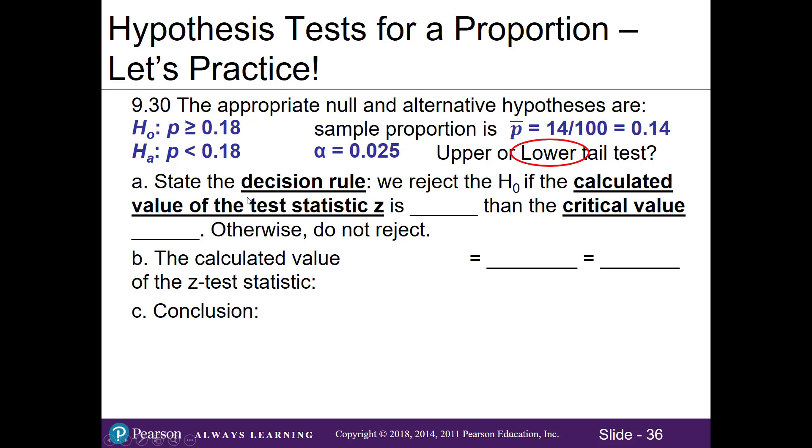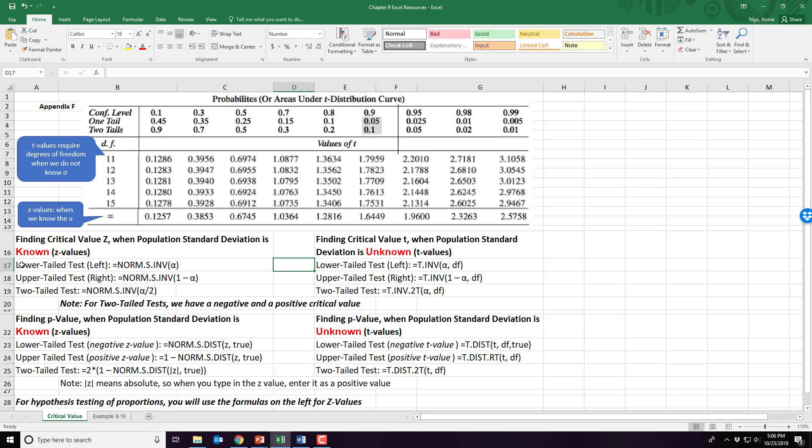For our decision rule, we will reject the null if the calculated value of the test statistic Z is less than the critical value. Less than because our alternative hypothesis also says less than. To find the critical value, we can use Excel or Appendix F. We'll just use Excel. For a lower-tailed test, we'll type in equals NORM.S.INV parentheses 0.025, close out, and hit Enter. And we get negative 1.96 for our critical value Z.